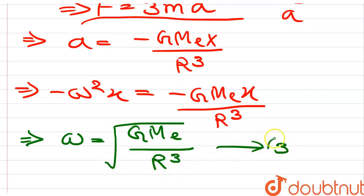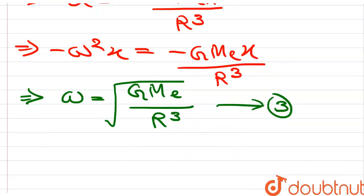So angular acceleration omega is equal to GMₑ divided by R cube. Equation number 3.